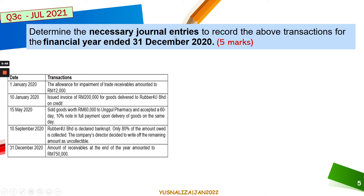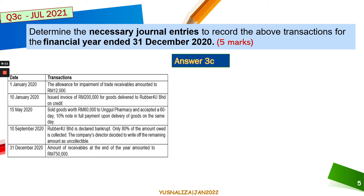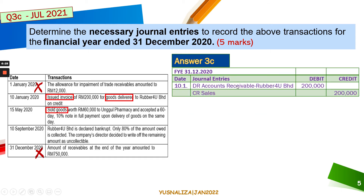Next is to determine and record the necessary journal entries for the year ended 31st of December. Information number one (1st January opening balance) and the last information (31st December closing balance) require no journal entries — they are just informational. We will now do the journal entry for 10th of January.